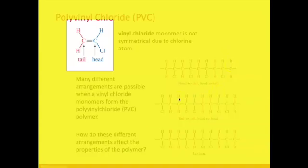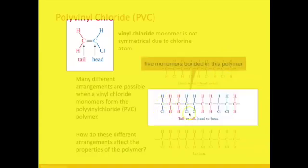You can also have a tail-to-tail or head-to-head arrangement. Focus on the colors. The first monomer's tail is attached to the tail of the second monomer, these two carbons. Then that forces the head to be bonded to the head of the next monomer, that third set of two.